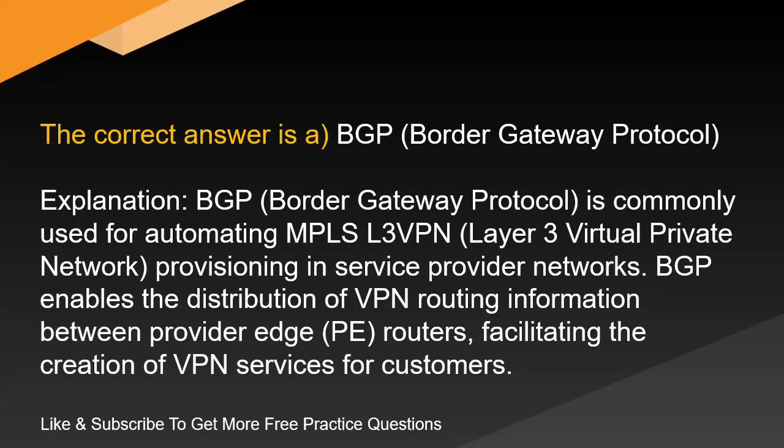The correct answer is A. BGP (Border Gateway Protocol). Explanation: BGP is commonly used for automating MPLS L3 VPN (Layer 3 Virtual Private Network) provisioning in service provider networks. BGP enables the distribution of VPN routing information between provider edge (PE) routers, facilitating the creation of VPN services for customers.